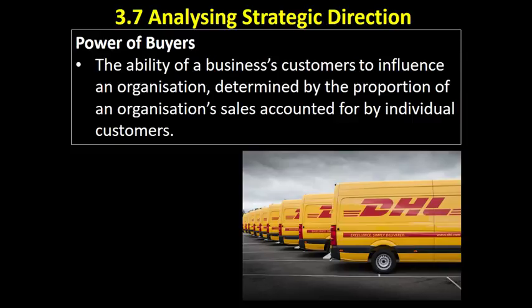Although DHL is a big customer for Ford, Ford also provides other fleets of vehicles and sells huge numbers of vehicles to individuals as well. Some companies really do only have one buyer, or very few buyers. Common examples would be farmers who sell to supermarkets, or a clothes manufacturer producing army uniforms selling to the army. And when 100% of your sales are going to one customer, you are hugely reliant on that business and they have an awful lot of power over you.